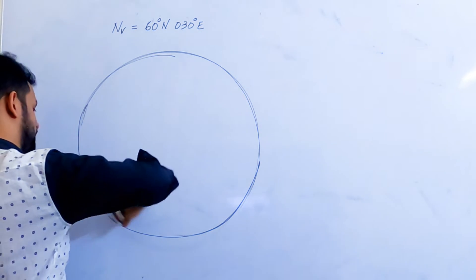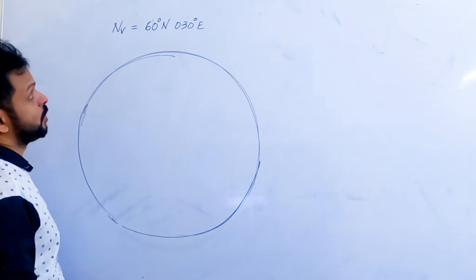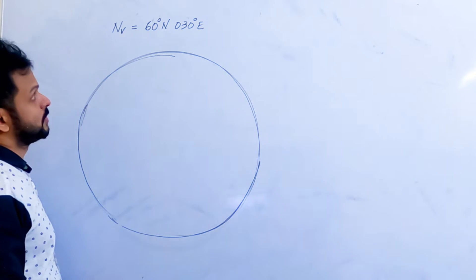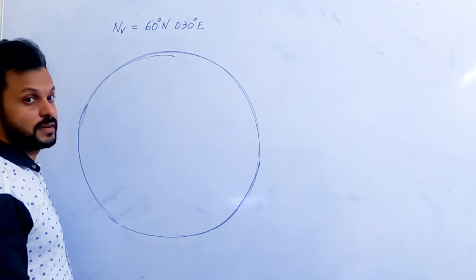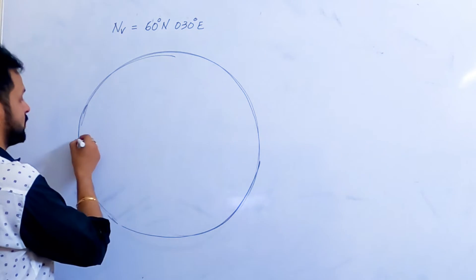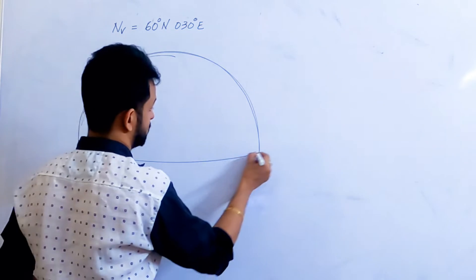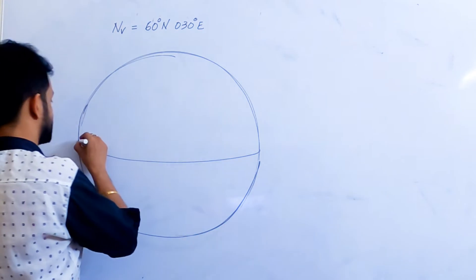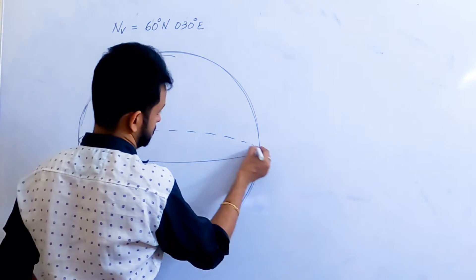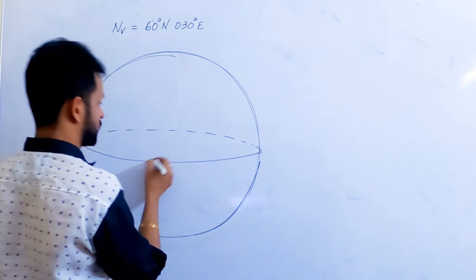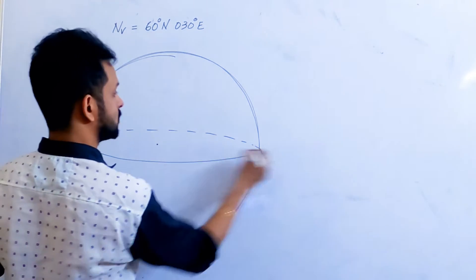We have a great circle here which has its northern vertex on 60 degrees north, 30 degrees east. Let me draw a great circle first and explain. This is the center of the earth.